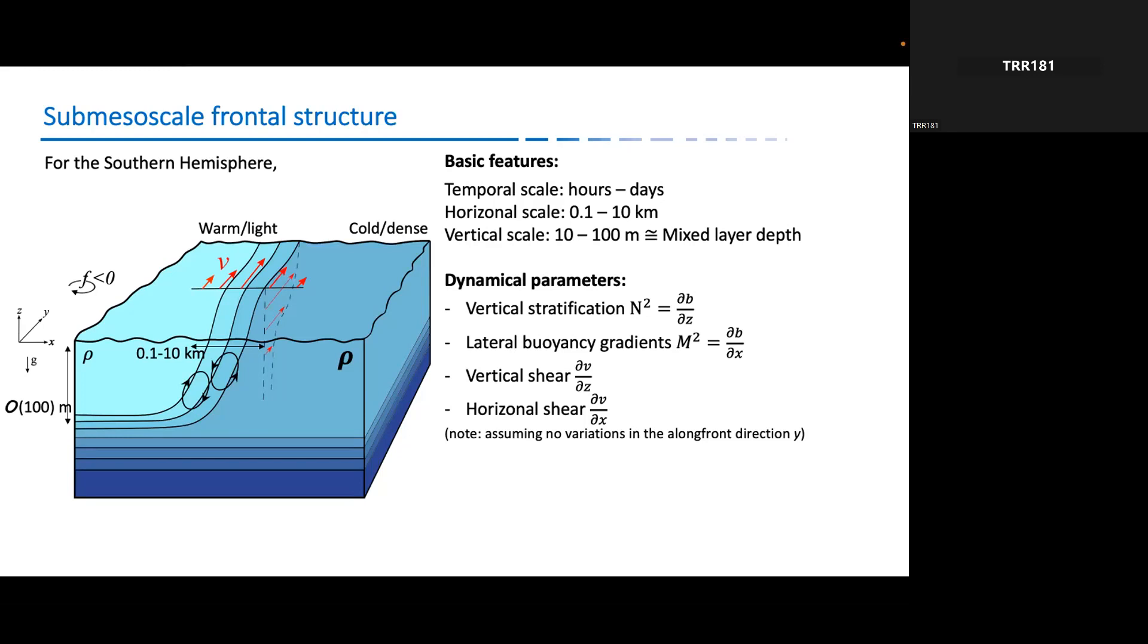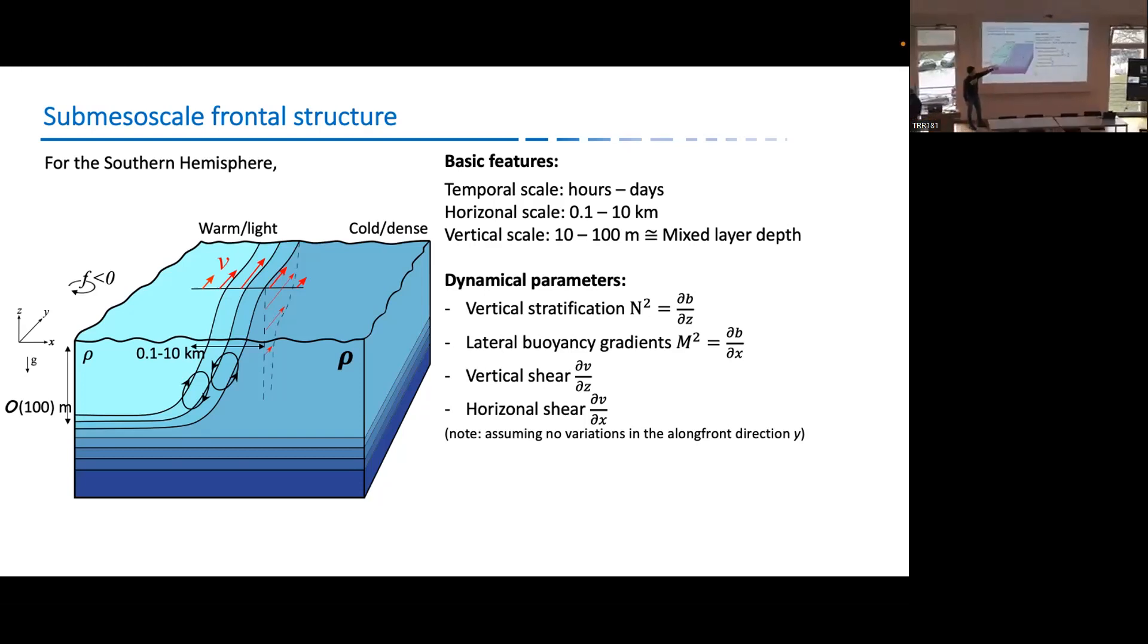And so this picture simply gives you an idea of how the front is. And the dynamic parameters, as you can see here, if you have a front here, you can have very strong lateral buoyancy gradient because you have strong density contrast here. And you can also have very strong vertical stratification, which is N² there. And you probably already noticed that the M², I only consider dB/dx. As I mentioned before, we don't consider the y direction because it's negligible. And the frontal jet here is denoted by this red arrow, which basically gives you the vertical shear dB/dz and horizontal shear dB/dx.